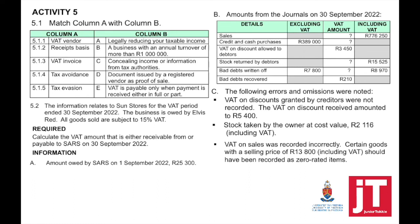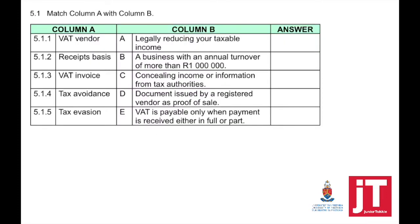This question consists of questions 5.1 and 5.2. Starting with 5.1, match column A with column B. A VAT vendor is a business with an annual turnover of more than 1 million. Receipt basis, number E: VAT is payable only when payment is received either in full or in part. VAT invoice is number D: a document issued by a registered vendor as proof of sale. Tax avoidance is number A: legally reducing your taxable income. And tax evasion is number C: concealing income or information from tax authorities — it's illegal.